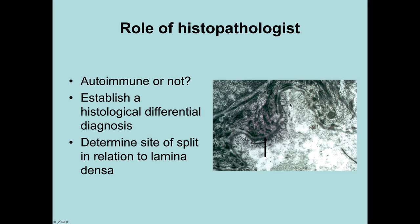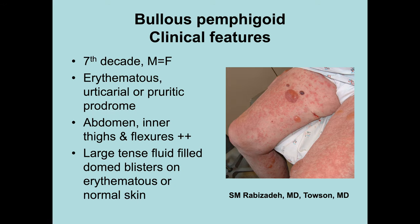Bullous pemphigoid develops in the lamina lucida; epidermolysis bullosa acquisita develops sub-lamina densa. Bullous pemphigoid is not desperately rare — it particularly affects the elderly, but can be seen in younger age groups, and very rarely in infants where it often presents around the external genitalia. This is of great importance because such a presentation could be mistaken for evidence of child abuse, so it's important to bear this in mind before contacting social services.